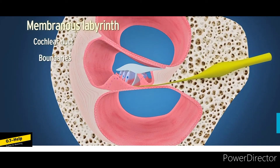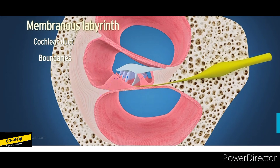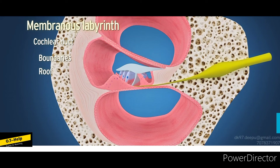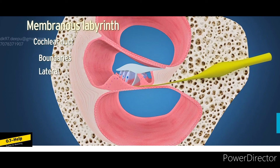The boundaries of the cochlear duct are: the base is formed by the osseous spiral lamina and basilar membrane; the roof is formed by the vestibular membrane, also known as Reissner's membrane, which extends from the upper surface of the spiral lamina to the lateral wall of the bony cochlea.